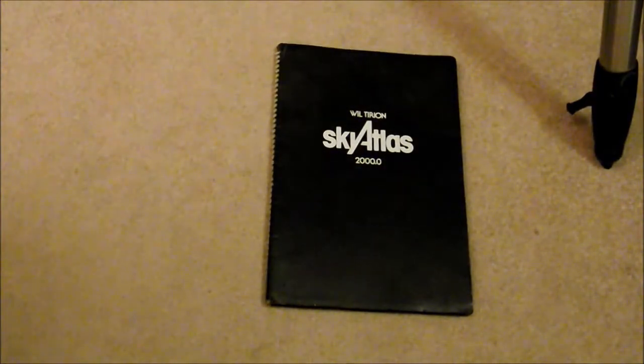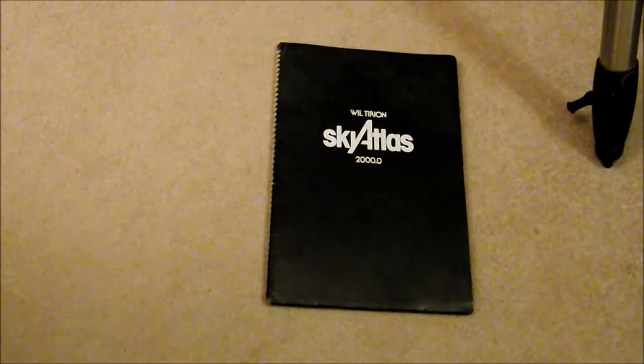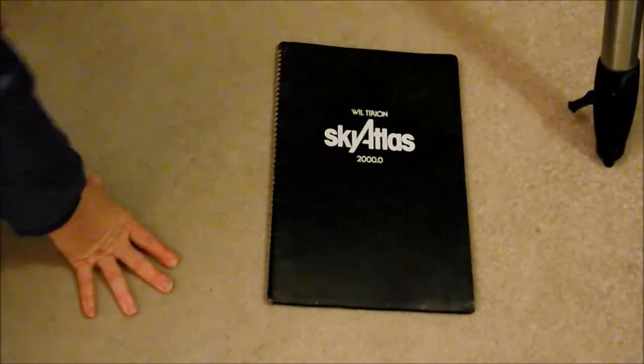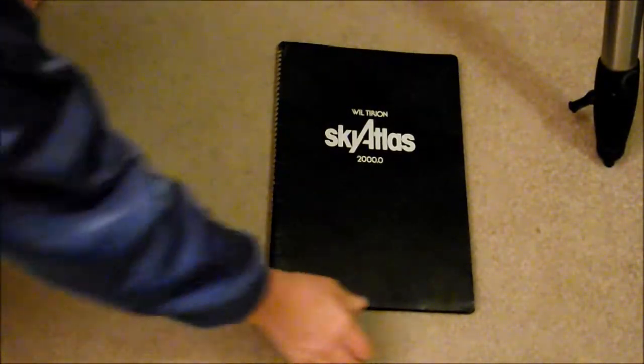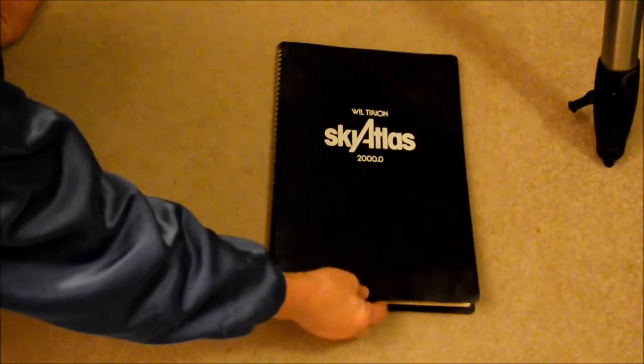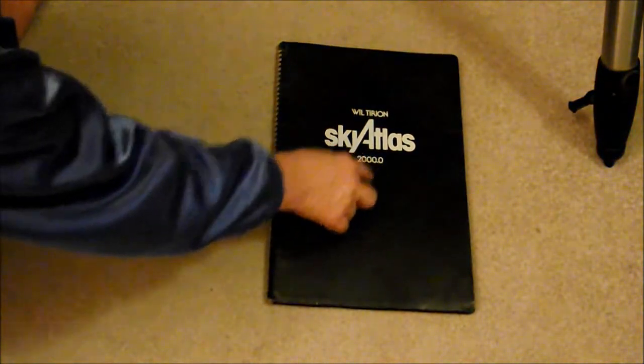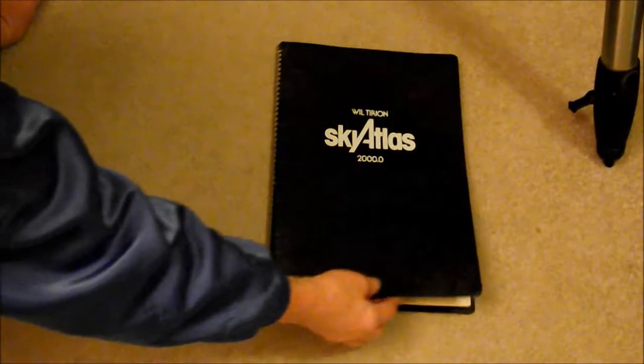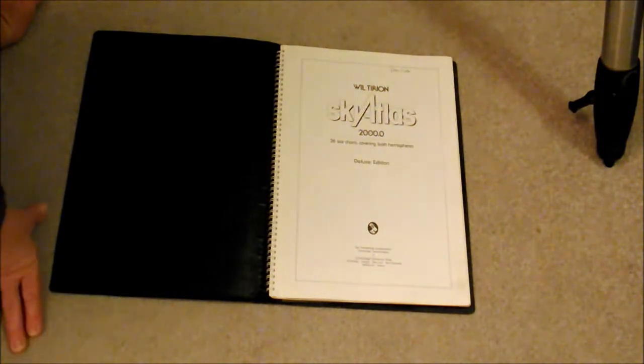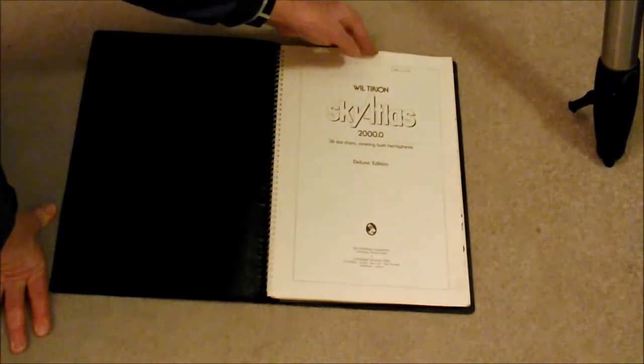Okay, so the first star chart I want to show you is the old classic type of atlas. This one's a really nice one. This is a Will, I guess it's pronounced Tirion Sky Atlas. It's got 2000.0, which I guess means its positions are based on the year 2000. This one here I think was actually printed in 1989.